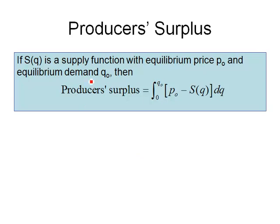If S(Q) is a supply function with an equilibrium price P₀ and an equilibrium demand Q₀, then the producer's surplus is the difference between those areas. We're going to find the definite integral from 0 to Q₀ of the quantity [P₀ - S(Q)] dQ.